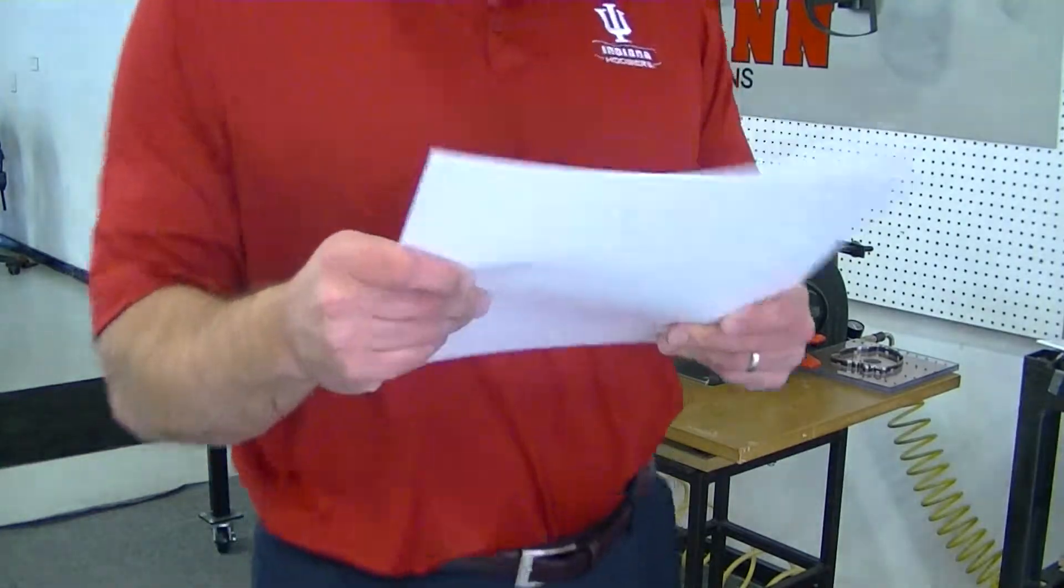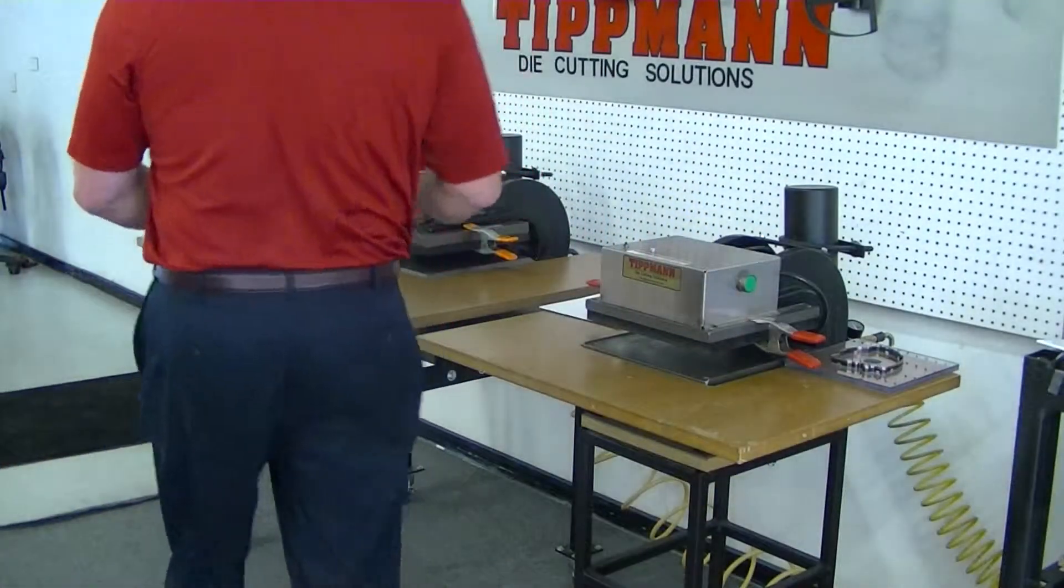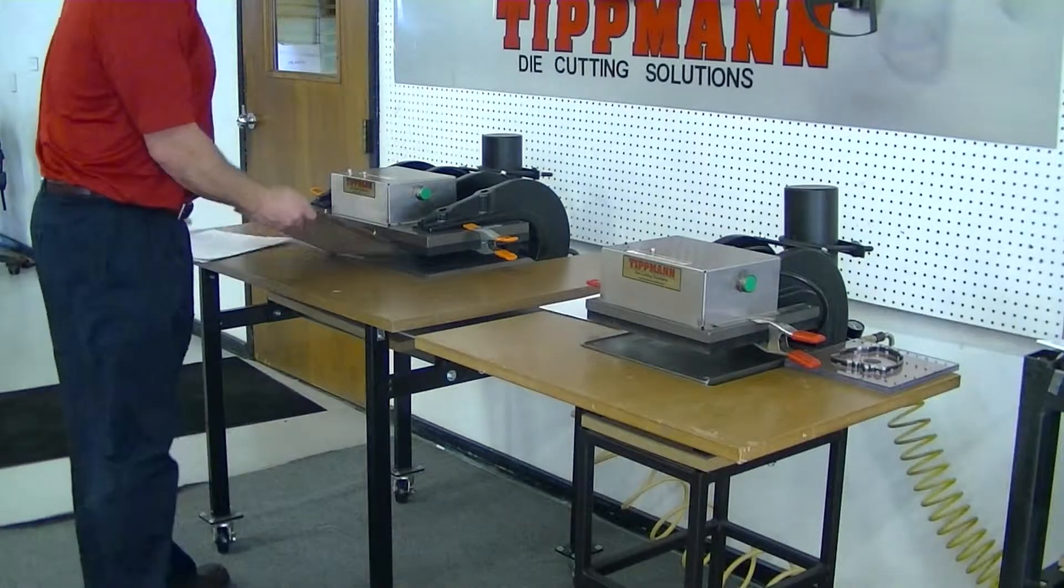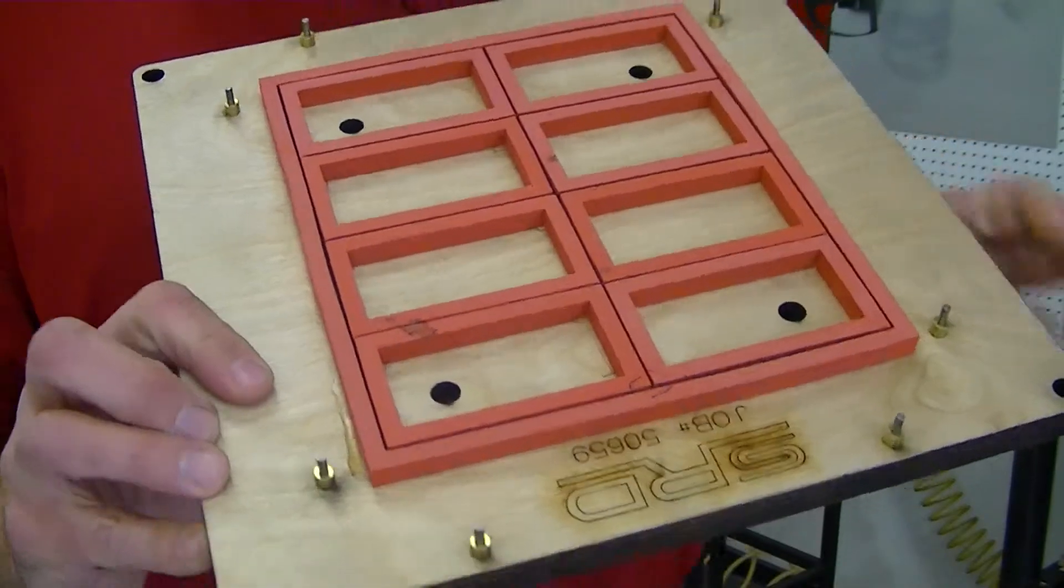This is, I think it's probably 100 pound card stock here. Real quick, I'm going to cut through with this business card die. This is a die that we talked about. It's a .937 steel rule die.